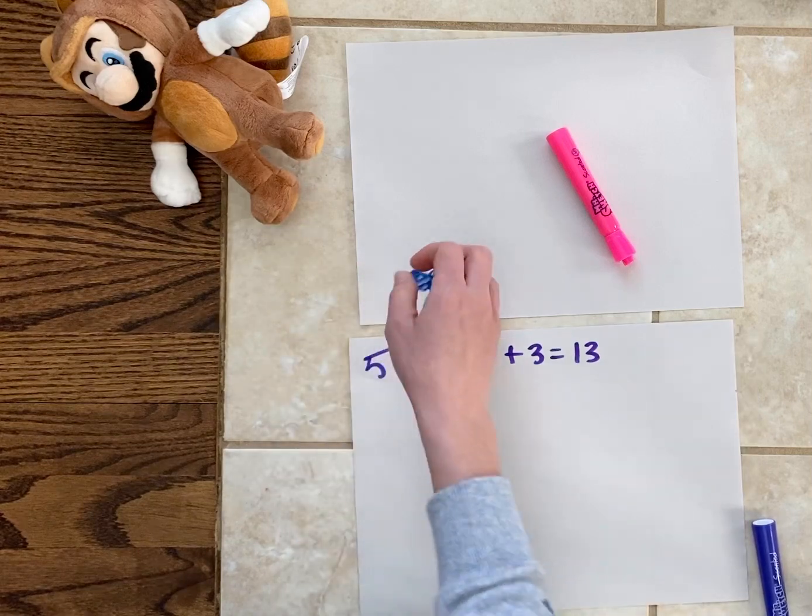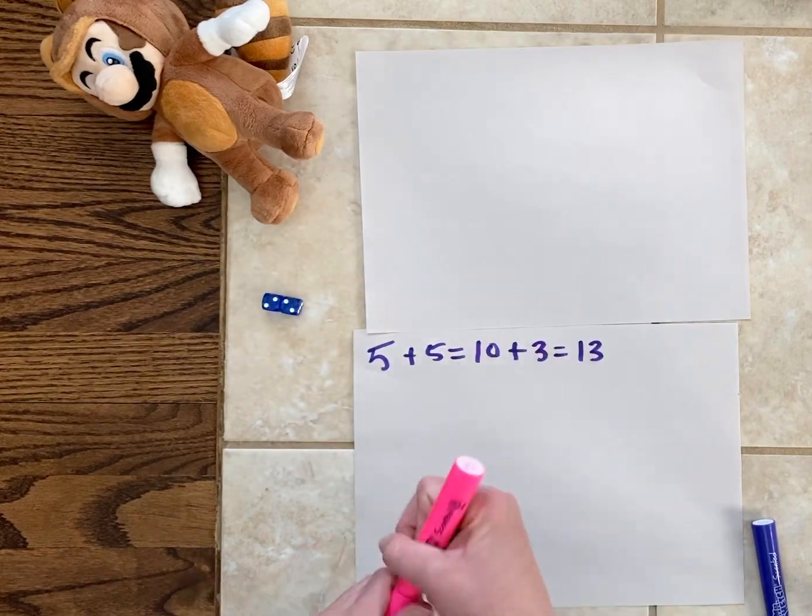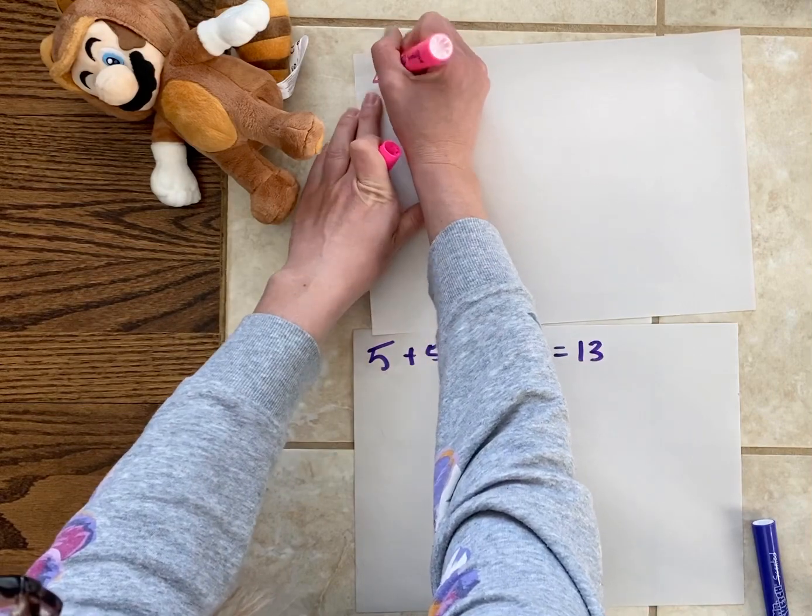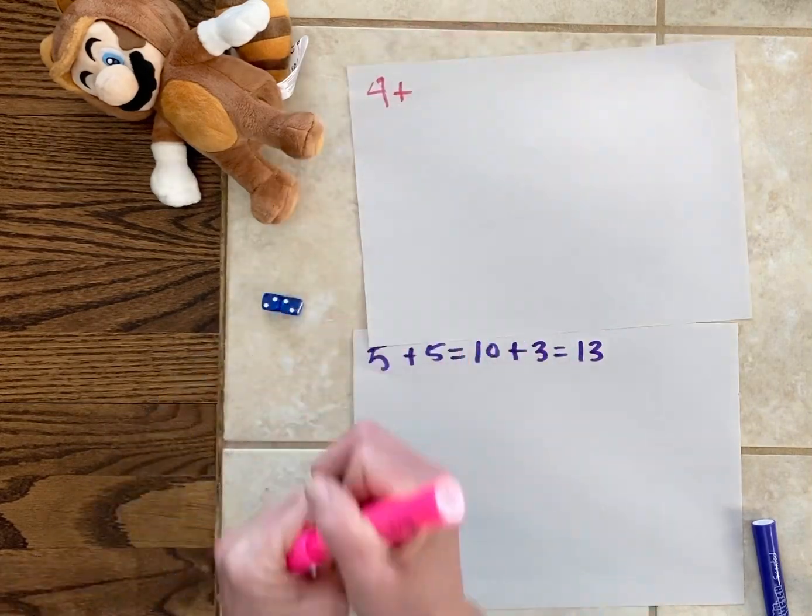Now it's Mario's turn. Two and two. Two plus two is four. So Mario is going to start now with a score of four.